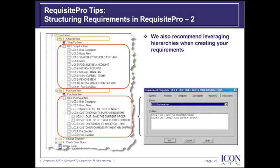In the Purchase Item package, I created a parent requirement, UC2 Purchase Item. UC2.1 Brief Description through UC2.8 Post Condition are child requirements of the UC2 Purchase Item.